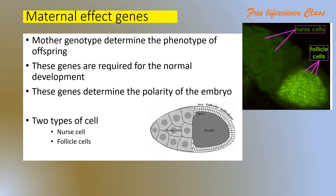What are the functions of maternal effect genes in the egg? One key function is that these genes determine the polarity of the embryo. Polarity means the egg will form an anterior and posterior axis, and a dorsal and ventral axis. Polarity develops in the egg, and for this we need maternal effect genes — maternal effect genes determine the polarity of the embryo.